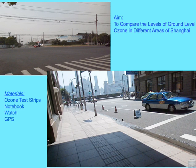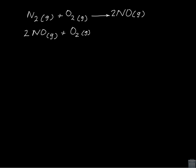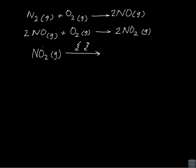Let's take a moment to quickly review the formation of photochemical smog. Nitrogen gas and oxygen combine in the heat of vehicle combustion chambers, and nitric oxide is the result of this reaction. Nitric oxide then reacts with oxygen, producing nitrogen dioxide. It is nitrogen dioxide in the presence of ultraviolet radiation from the sun that gives rise to nitric oxide and a single atom of oxygen.